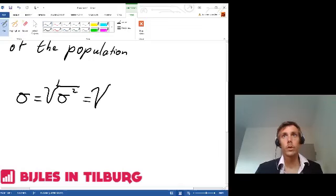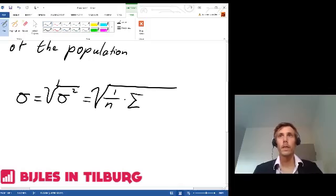It will be the square root of 1 divided by n times the summation of (x minus mu) squared.